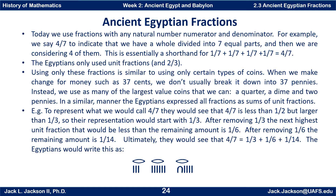To represent what we would call four-sevenths, they would see that four-sevenths is less than a half but greater than a third, so the representation would start with one-third. After removing one-third, the next highest unit fraction less than the remaining amount is one-sixth. After removing one-sixth, the remaining amount is one-fourteenth. So four-sevenths equals one-third plus one-sixth plus one-fourteenth.